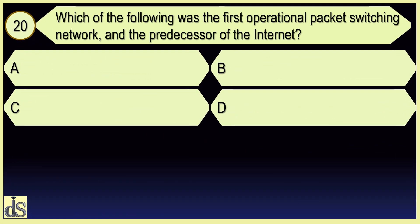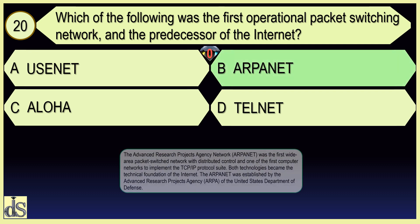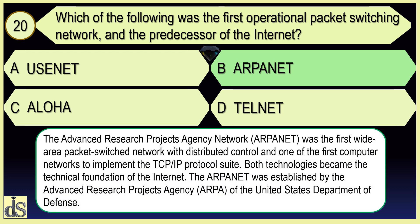Which of the following was the first operational packet switching network and the predecessor of the internet? ARPANET.